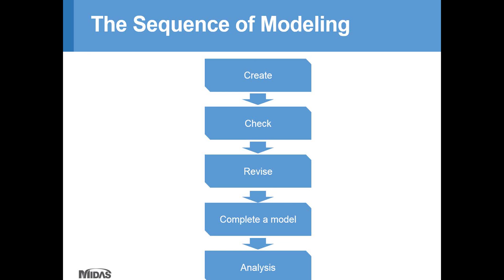Let me briefly go over the sequence of modeling a bridge. Creating a primary bridge model with nodes and elements is the first step. Next, you will check whether your model is well made without errors. If you find any errors, you need to revise them. Unfortunately, you may step into an endless loop between check and revise steps if you don't understand MIDAS Civil very well. Afterwards, your mathematically assumed model will be completed and go to the analysis process. Today, I will be very focused on the create, check, and revise steps — specifically, how to disconnect the loop in your modeling sequence — so that the analysis part will be covered in the next intro training sessions.